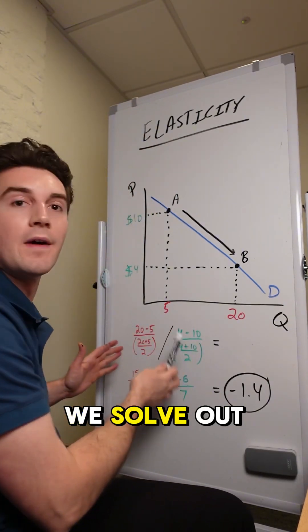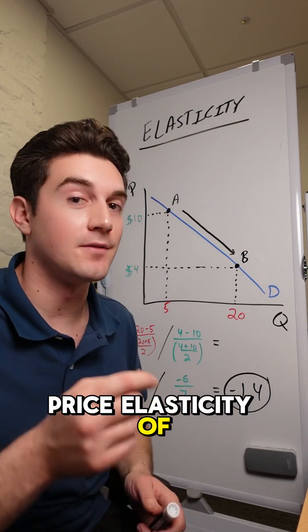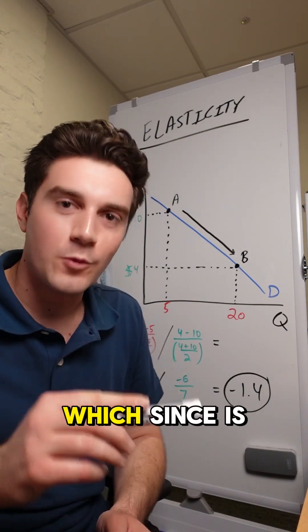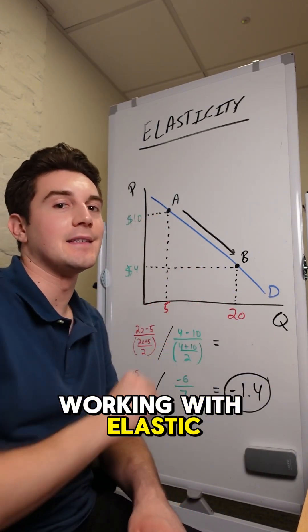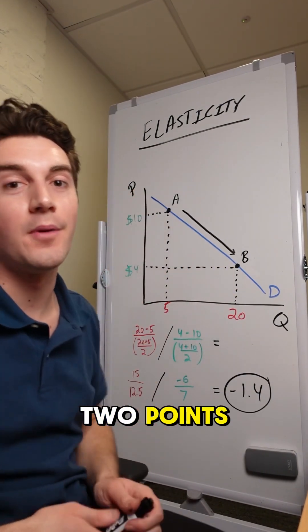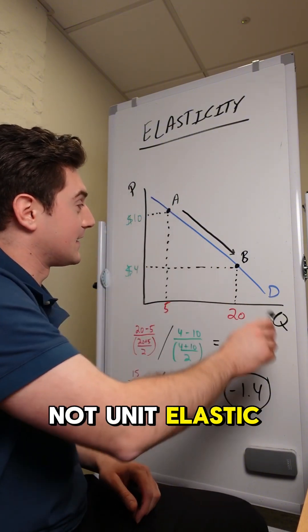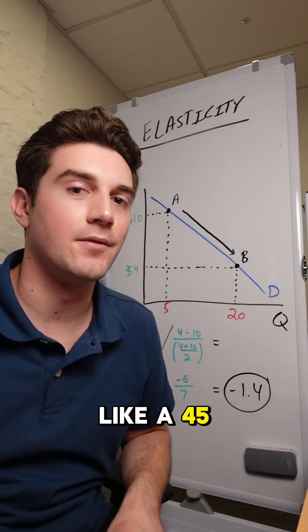But when we solve out the midpoint method here, we get a price elasticity of demand of negative 1.4, which since is less than negative one means that we're working with elastic demand between these two points, not unit elastic, even though this demand curve looks like a 45 degree angle.